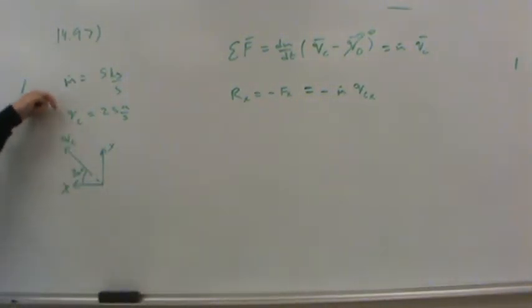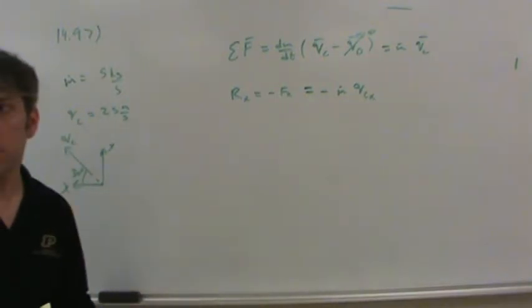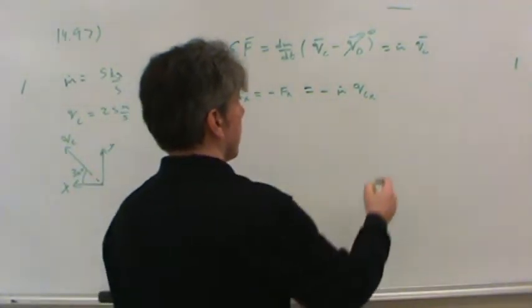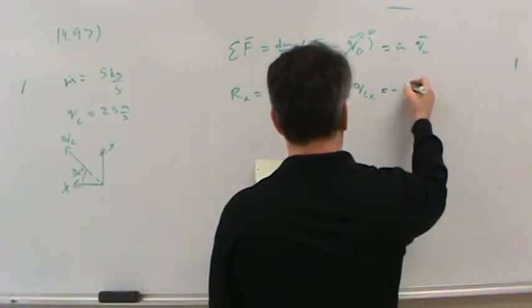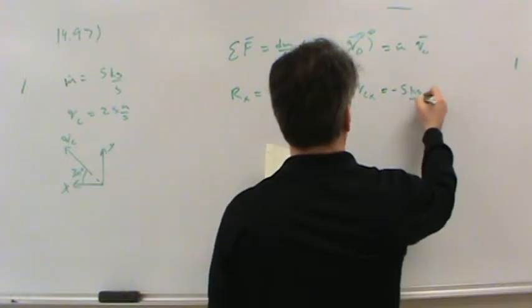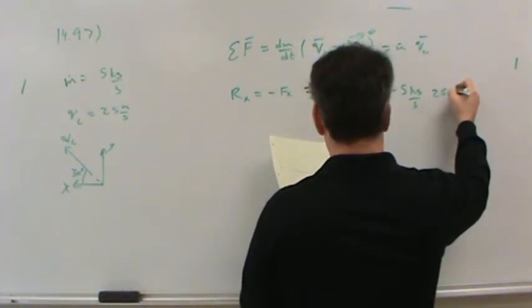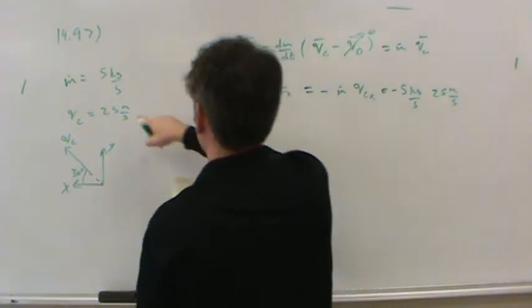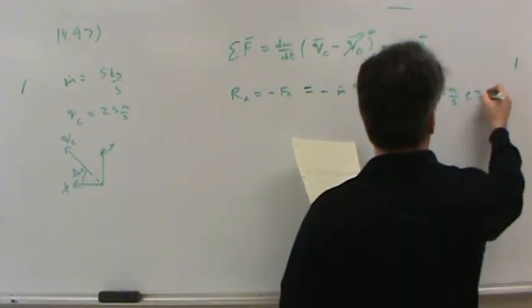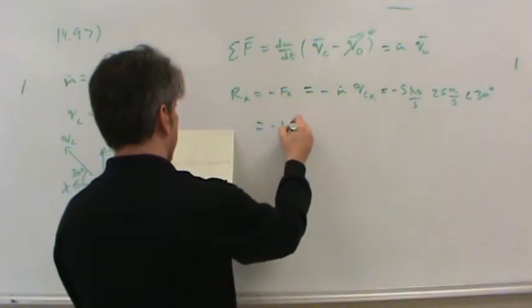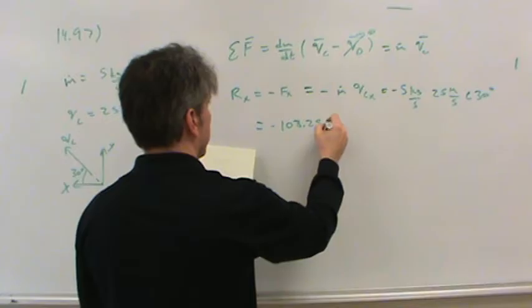And so basically then all we need to do is plug in negative m dot VC x because we're going to deal with just the x component. Notice they didn't ask anything about how hard the chips caused the chipper to push down more on the pavement. They're not interested in that. They just want the horizontal reaction on the trailer hitch. So this would be negative 5 kilograms per second multiplied by 25 meters per second because that's the speed multiplied by the cosine of 30 degrees. So you plug all that in, you find the reaction is a negative 108.25 newtons.